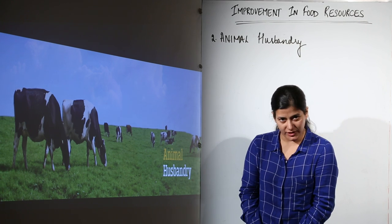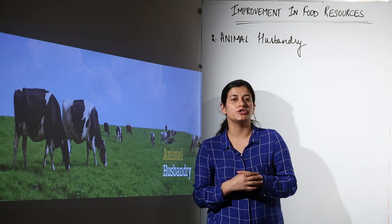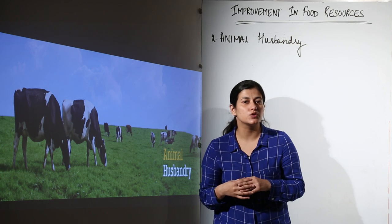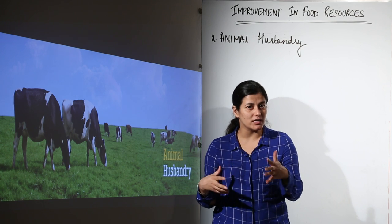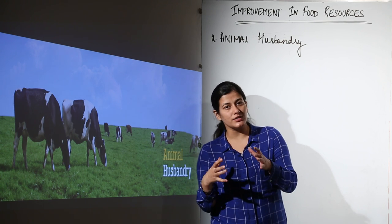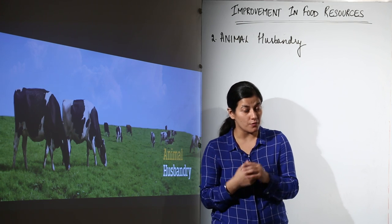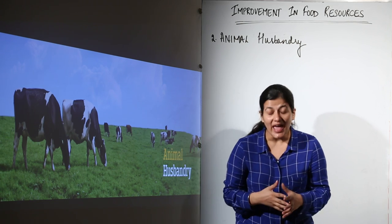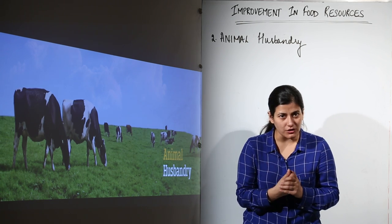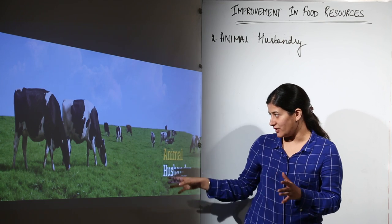Now we have to talk about animal husbandry. As I told you, there are two sources of food — one is crop and the other one is animal source. We are going to deal with improvement in the food produced from animals, and that particular aspect of study is known as animal husbandry.